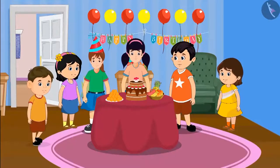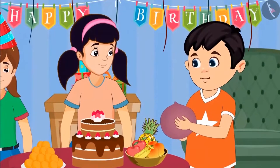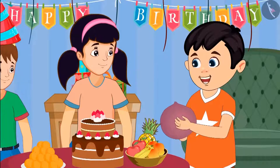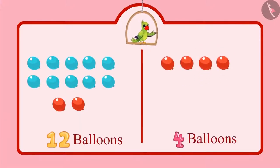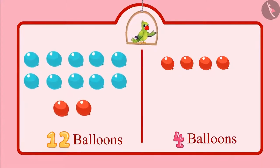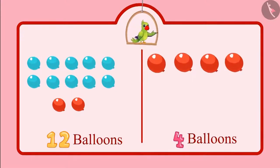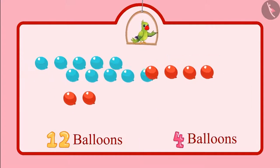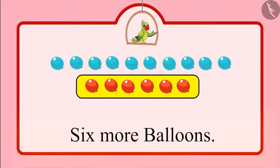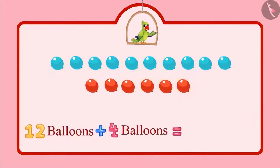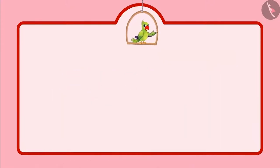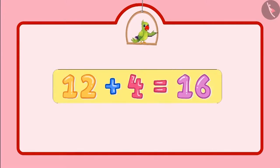Today is Aarti's birthday. Aarti's friends are all busy preparing for her party. Neha is blowing balloons for the party. Come on Neha, I will also help you blow the balloons. Neha blew 12 balloons and Chotu blew 4 balloons. If we see all the balloons together, we have 1 group of 10 balloons and 6 more balloons — that means a total of 16 balloons. So 12 and 4 balloons make a total of 16 balloons. When we add 12 and 4, we get a total of 16.